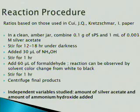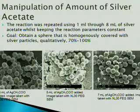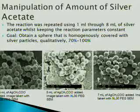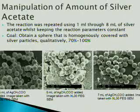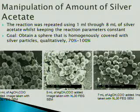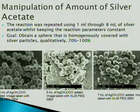We then took the final products, sputter-coated them, and imaged them on the SEM. The two independent variables I studied were the amount of silver acetate added and the amount of ammonium hydroxide added. Starting with manipulation of the silver acetate: the calculated amount from the Kretschmar paper was 1 milliliter. We decided to repeat the reaction from 1 milliliter to 8 milliliters of silver acetate added, while keeping all other parameters constant, with the goal of achieving a sphere between 70 and 100 percent covered with silver particles.